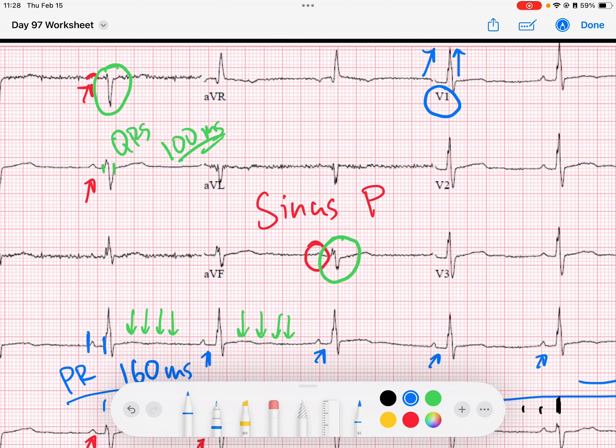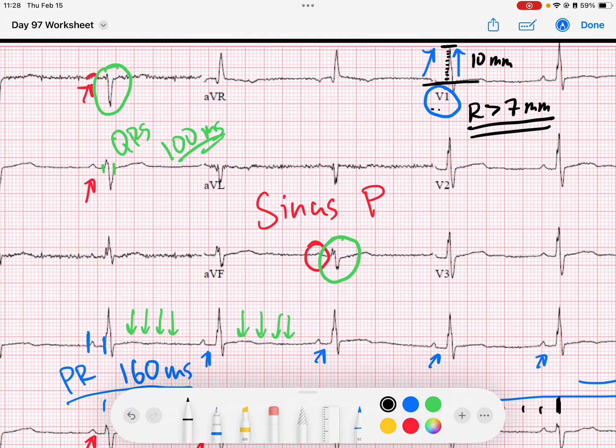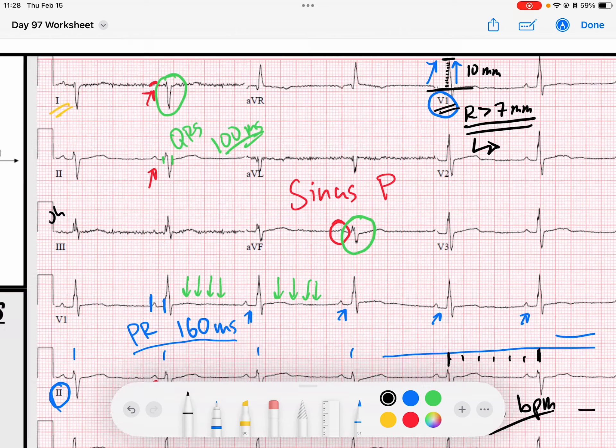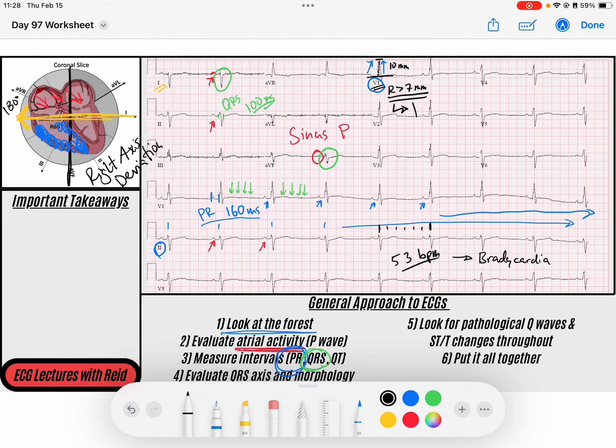In the amplitude of the R wave, if I draw my baseline which is right here, and I see the top of the R wave is right here, that is one, two, three, four, five, six, seven, eight, nine, ten millimeters amplitude. And we know that if the R is greater than seven millimeters in amplitude in these right ventricular leads, V1, then that is criteria for right ventricular hypertrophy.